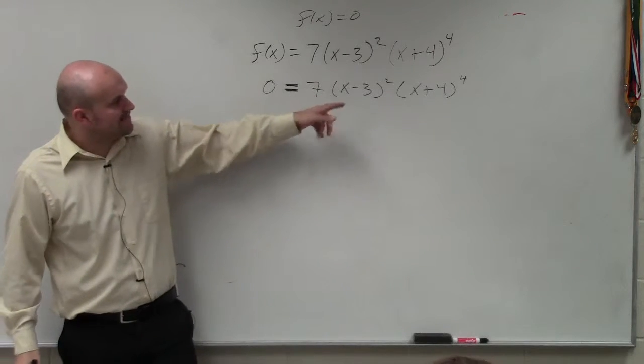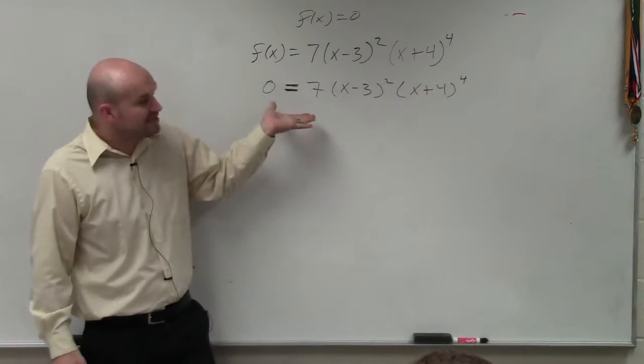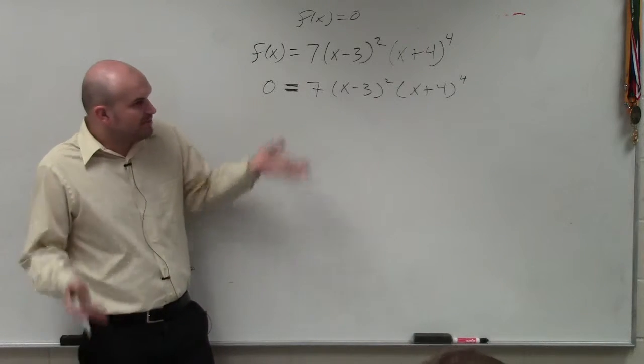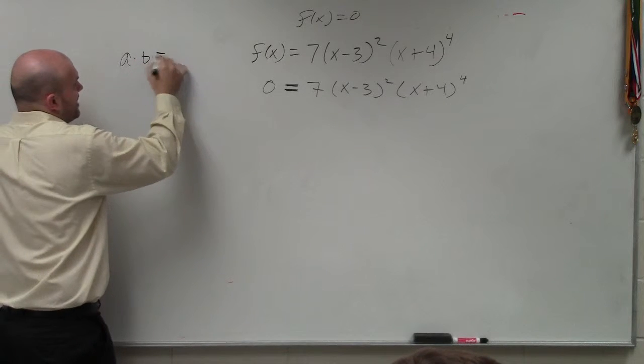So when we have 7 times (x - 3) squared times (x + 4) to the fourth, basically to go ahead and solve this, we want to set up each and every factor. If you guys remember the zero product property.